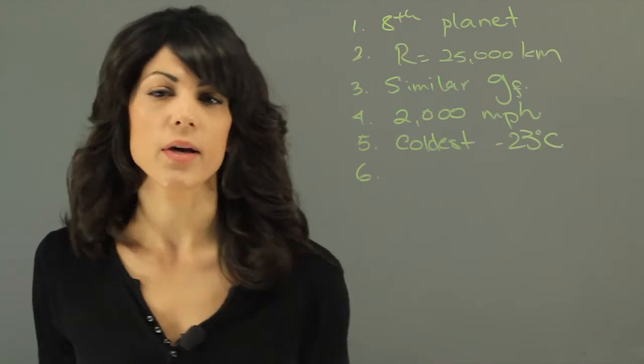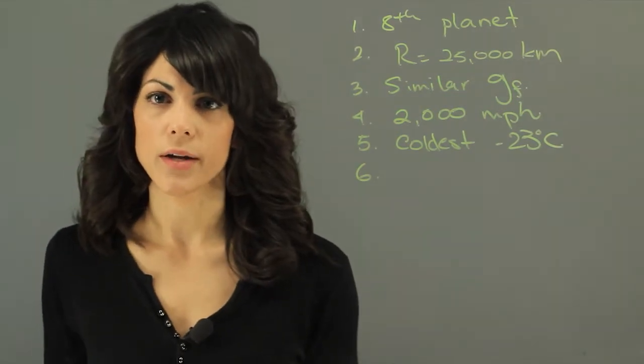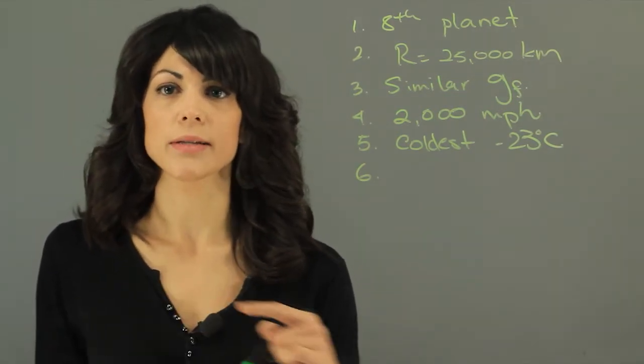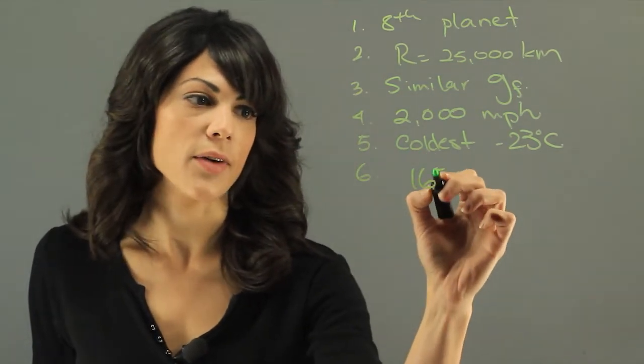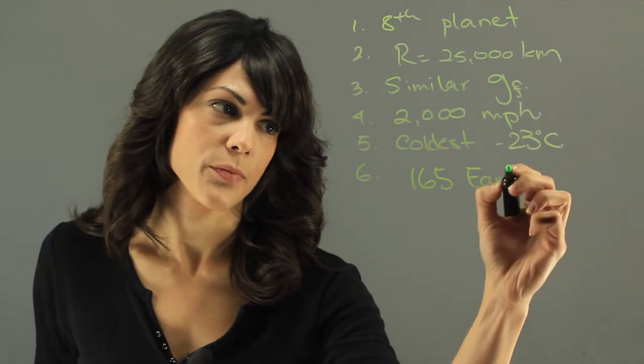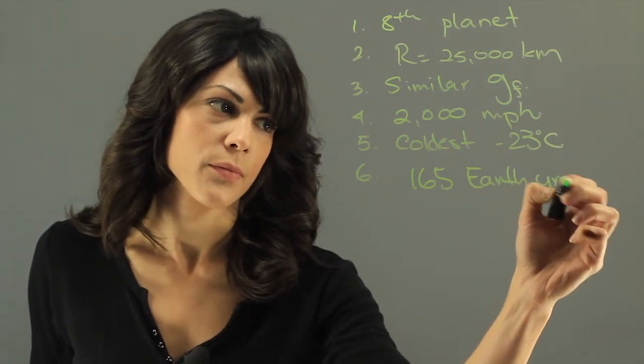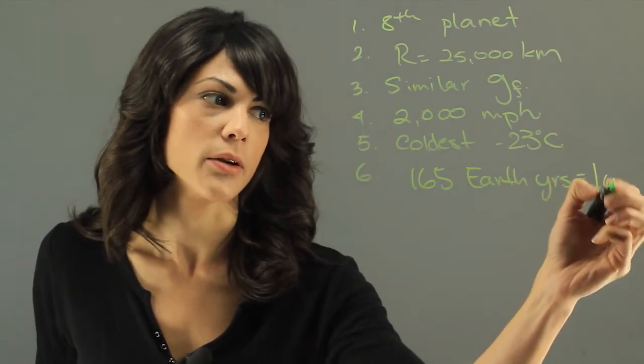And then another one is that one year on Neptune, meaning that the time that it takes to orbit the Sun, is 165 Earth years, is equal to one year on Neptune.